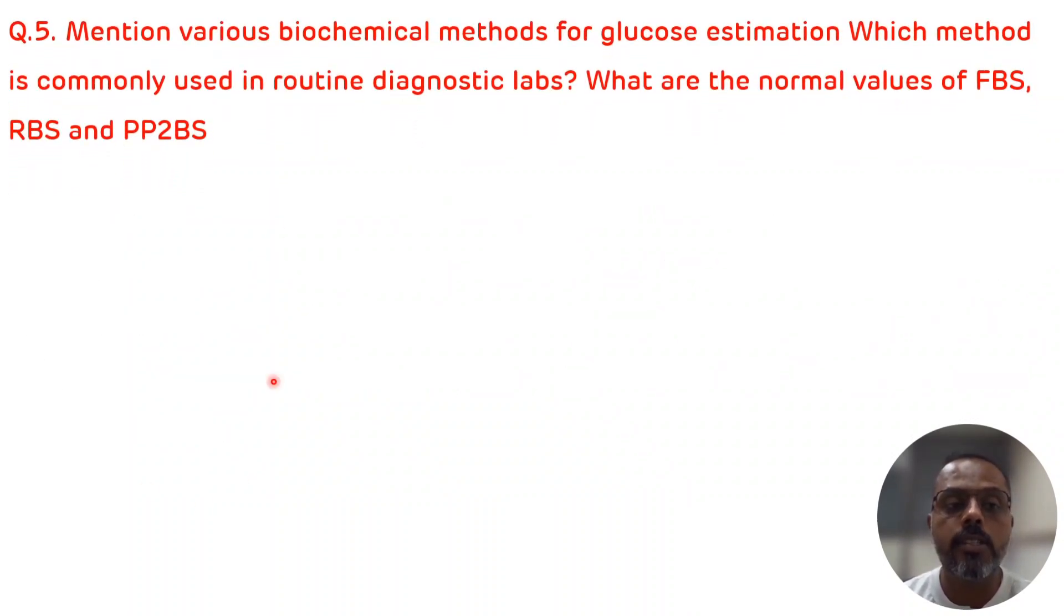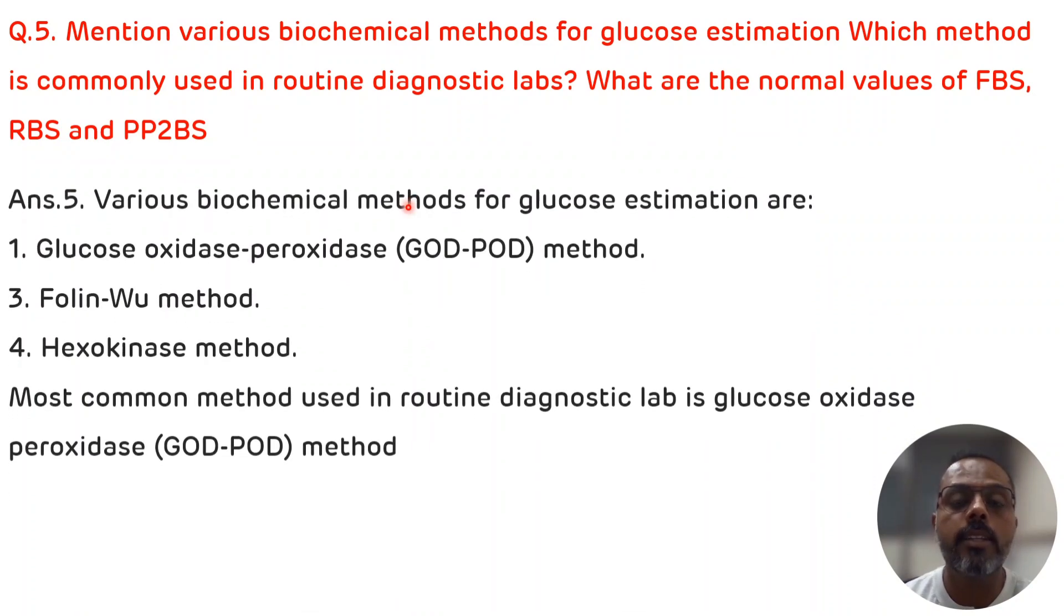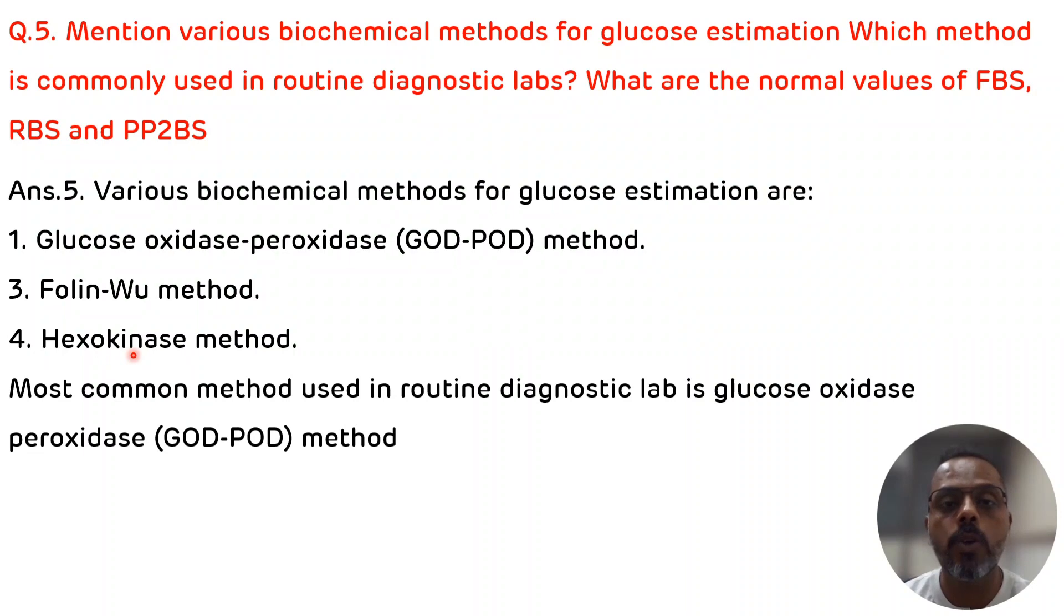Fifth and last question is: mention various biochemical methods for glucose estimation. Which method is commonly used in routine diagnostic labs and what are the normal values of FBS, RBS, and PP2BS? The various biochemical methods for glucose estimation are: first one is the glucose oxidase and peroxidase, that is GOD-POD. Second one is the Folin-Wu method. Third one is the hexokinase method. Among these three, glucose oxidase peroxidase method is commonly used in routine diagnostic labs. The normal value of FBS, that is fasting blood sugar, is 70 to 100 milligram per deciliter. Normal value of RBS, that is random blood sugar, is 80 to 140 milligram per deciliter. And the normal value of PP2BS is up to 140 milligram per deciliter.